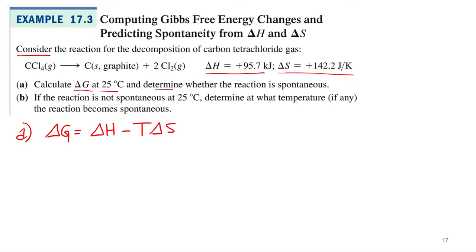So delta G is delta H minus T delta S. Good. Our enthalpy is right here, plus 95.7 kilojoules, minus temperature, 25 degrees Celsius, right? 95 degrees Celsius. I'll just write that right here.